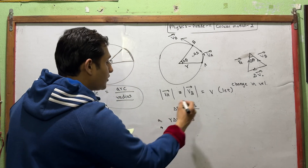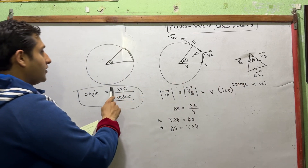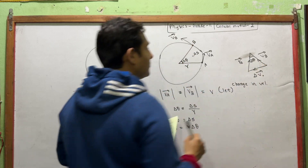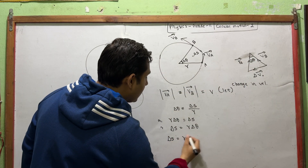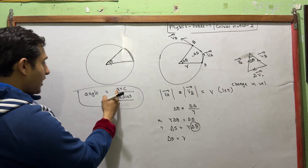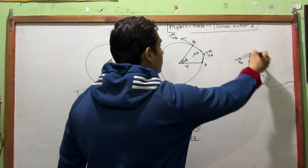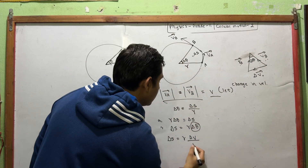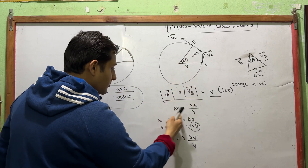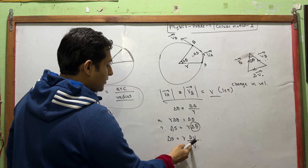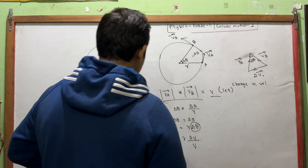This means R times del-theta equals del-S, and V times del-theta equals del-V. Using cross multiplication we can assimilate these. So del-S equals R times del-theta, and del-V equals V times del-theta. This is the formula. We will use cross multiplication to proceed further.